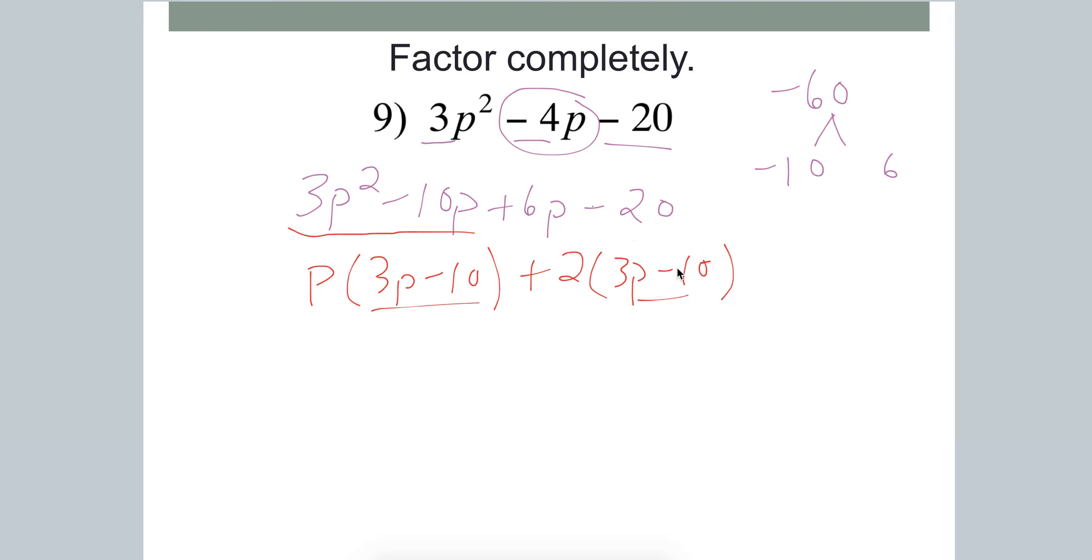So these match up, which is a good thing. So 3p minus 10. And then the stuff on the outside is p plus 2. So it's just a little more of a concrete, step-by-step procedural way to get this thing factored. Otherwise, you have to do some guessing and checking. This is a little bit more structured of a guessing and checking, even though we have to still do it over here.